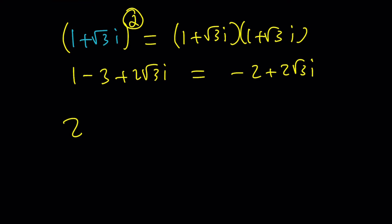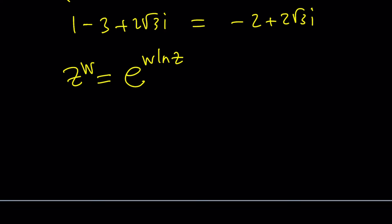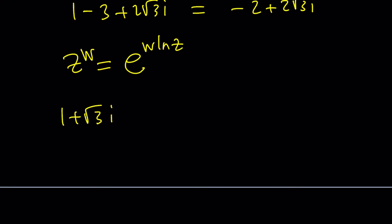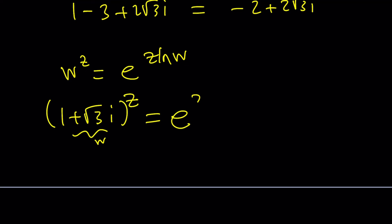Whenever you have something like z^w, you can write it as e^(w ln z). So in this case, we have (1 + √3i)^z. So we can write this as e^(z ln(1 + √3i)).